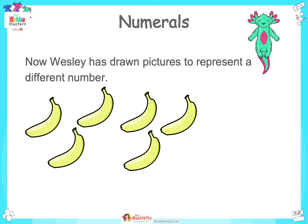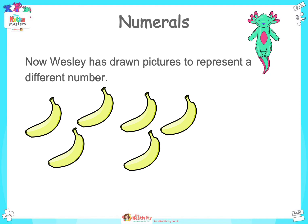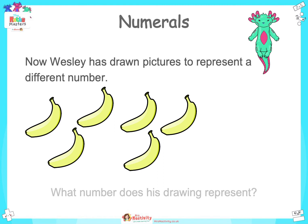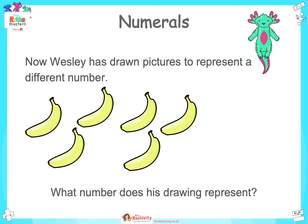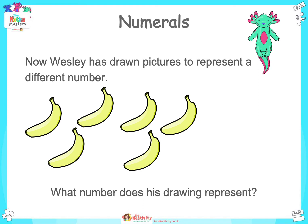Now, Wesley has drawn pictures to represent a different number. With a talk partner, write down the number or choose a number card to show the number that is represented by the bananas. You can use a whiteboard. I'll give you a few seconds. What number does his drawing represent? Let's count together: 1, 2, 3, 4, 5, 6. A question for you — how would you represent less than six bananas? Tell a talk partner now. That's right. If you wanted to represent less than six bananas, for example four bananas, you would simply draw four bananas. Easy.